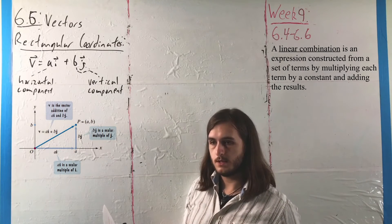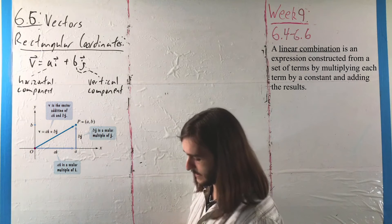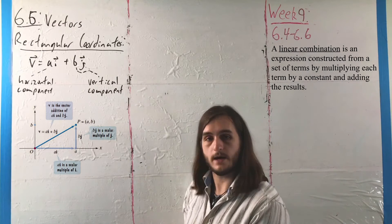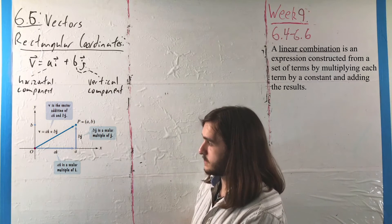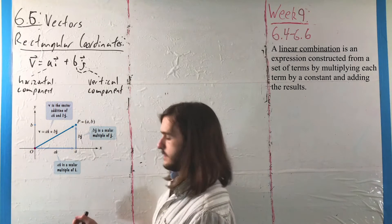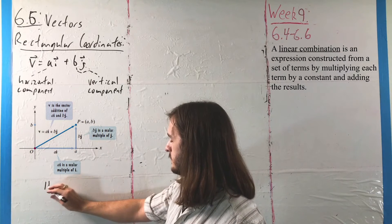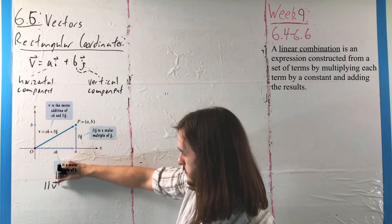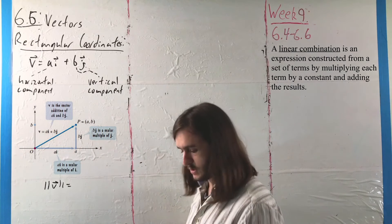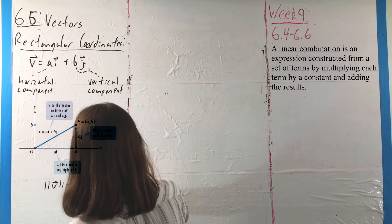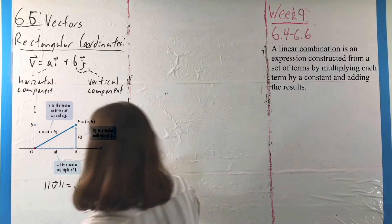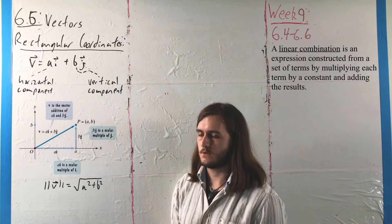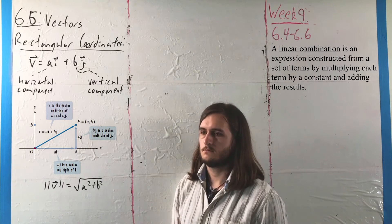The magnitude — the length of that vector — acts in the exact same way that a modulus did, and exactly the same way as a distance does. That is, the magnitude of a vector V is just the square root of A squared plus B squared — the sum of the vertical and horizontal components squared under a radical, exactly as it's always been.